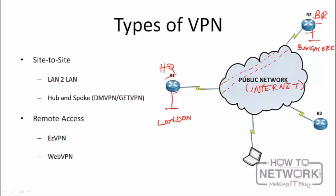Site-to-site VPNs can also be configured in a hub-and-spoke scenario, where one hub connects to many spokes. Cisco has advanced VPN protocols for this, such as Dynamic Multi-point VPN (DMVPN) and Group Encrypted Transport VPN (GETVPN), but these are well beyond the scope of the ICND2 series.